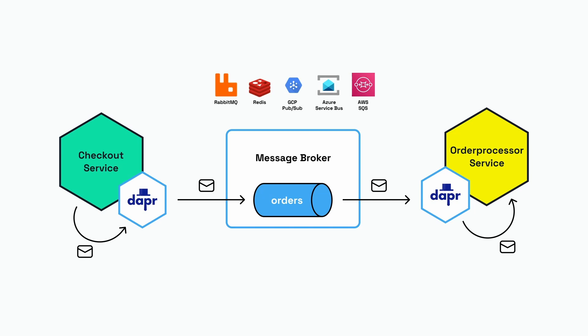Dapr can use many different kinds of message brokers. Just to name a few: it can use RabbitMQ, Redis, GCP Pub/Sub, Azure Service Bus, and AWS SQS. But how does Dapr know which one to use?